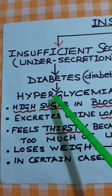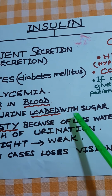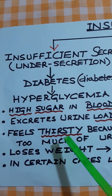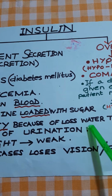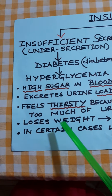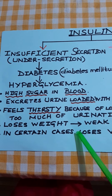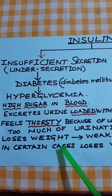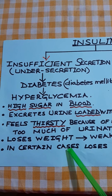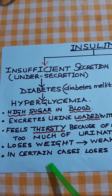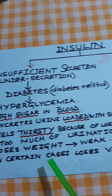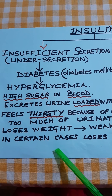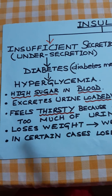When there is hyperglycemia, the person excretes urine loaded with sugar. They feel thirsty because of water loss through excessive urination. The person also loses weight, becomes very weak, and in certain cases may lose vision or eyesight.